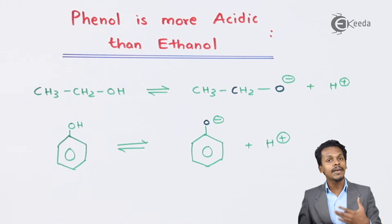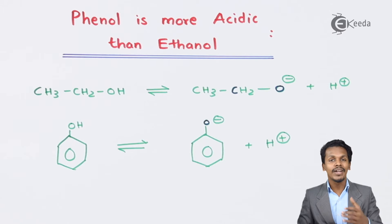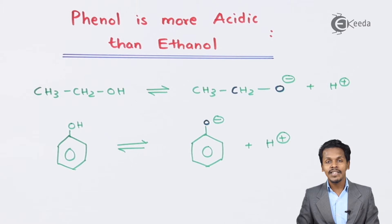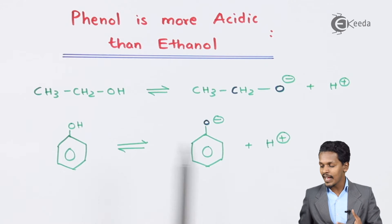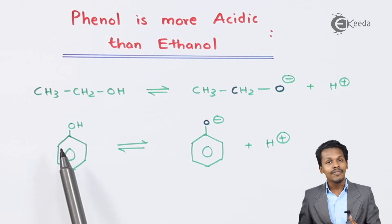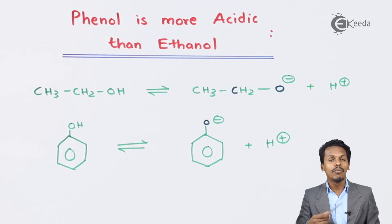Because the SP2 carbon withdraws electron density from oxygen, the polarity of the O-H bond increases in phenol. That is the reason H+ ion is released more easily when phenol ionizes, making phenol more acidic in nature.